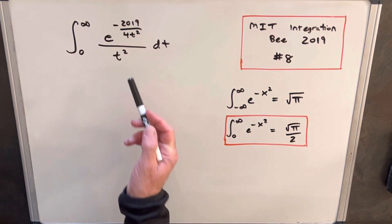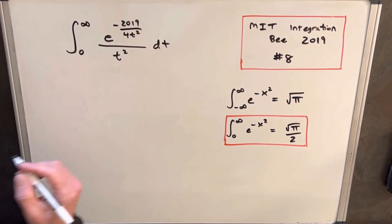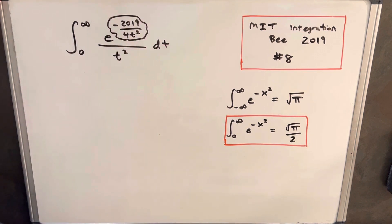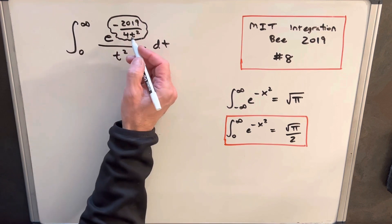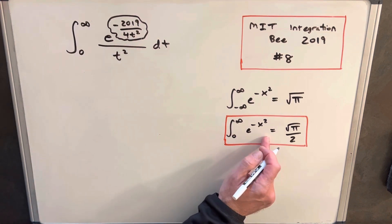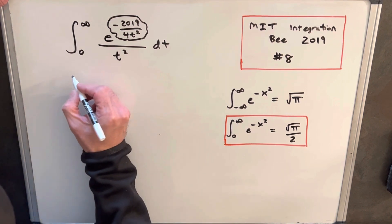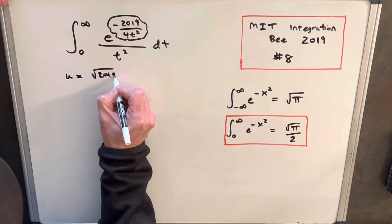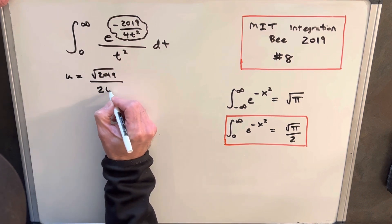So now everything I'm going to do is try to get our integral to match this formula. What I'm going to do is a u-substitution — we really want to clean up the exponent so it looks like negative u-squared. So I'm going to let u equal to the square root of 2019 over 2, times 1/t.